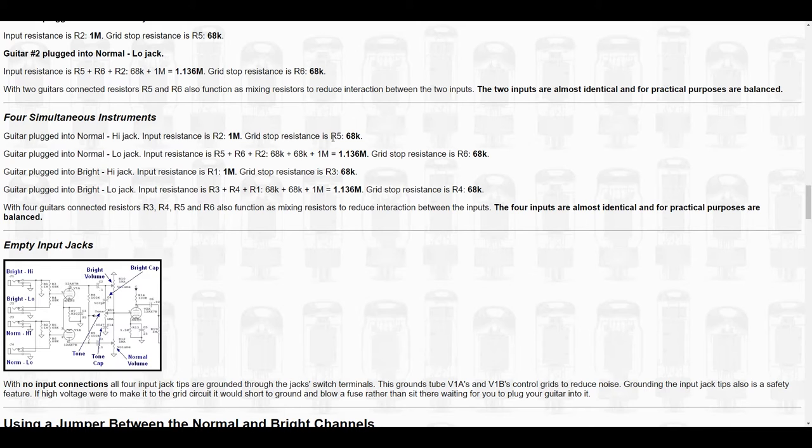The R2 would be the one to ground that comes into the input itself. That also can impact the tone. Both of these layouts have the exact same grid stop resistance of 68K, but it's 1 meg in one, so it's 1.13 meg in the other, so that alters that grounding resistor. It effectively gives you a slightly different tonality for the low jack versus the high jack.